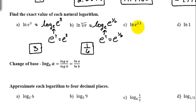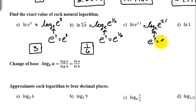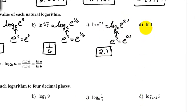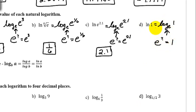Natural log of e raised to 2.1 is really log base e of e to the 2.1. What power can you raise e to so that you get e to the 2.1? The answer is 2.1. The last one: natural log of 1 is really log base e of 1. The log of 1, regardless of the base, is always 0, because anything raised to the 0 power equals 1.